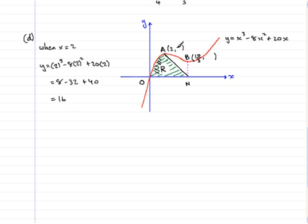Work that out and we find that we get 16. So the y coordinate, let me mark it in here, is 16. A has coordinates (2, 16).